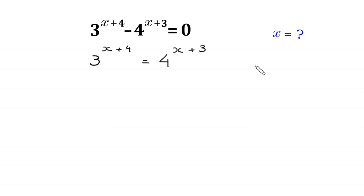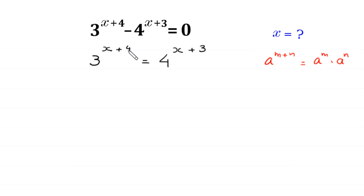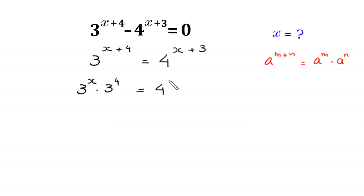By using the power rule a to the power m plus n equals a to the power m times a to the power n, this 3 to the power x plus 4 becomes 3 to the power x times 3 to the power 4, equal to 4 to the power x times 4 to the power 3.